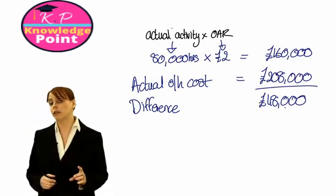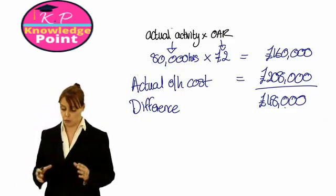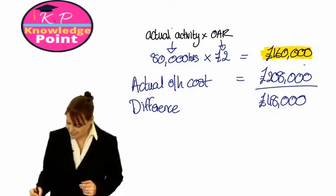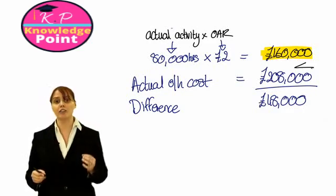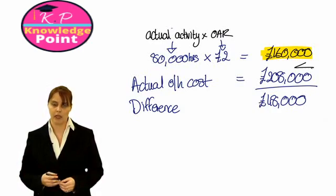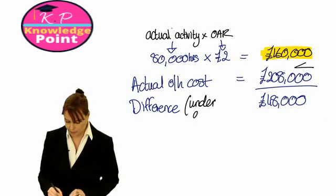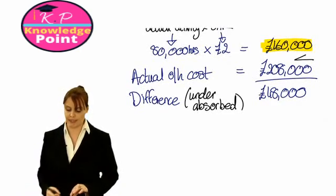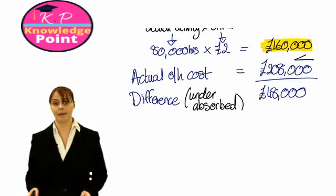So have we under or over absorbed our production overheads? Our overhead absorbed is less than our actual overhead cost, meaning we have not charged enough in overheads to our production account. Therefore, we say that we have under absorbed — and for this company, they have under absorbed their overheads by £48,000.